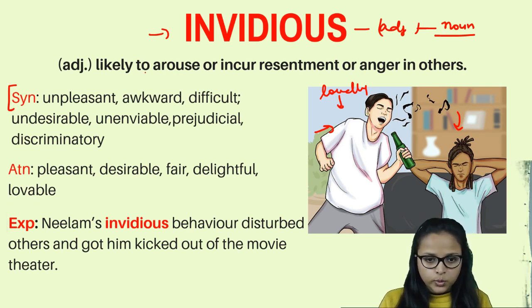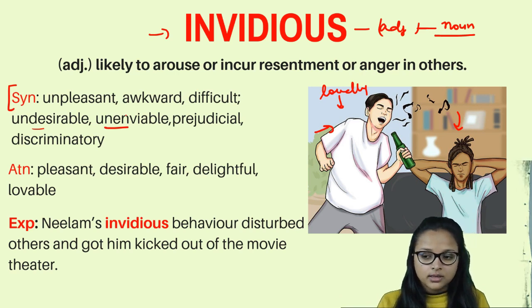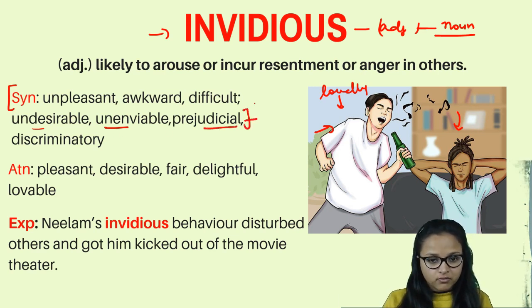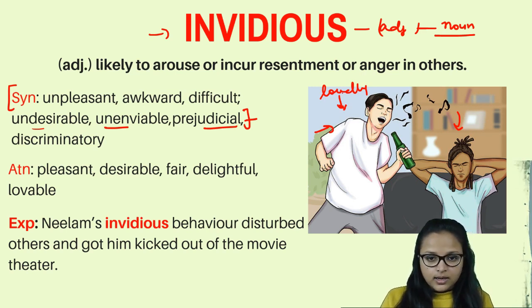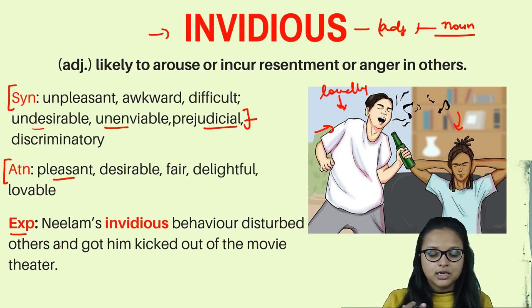Synonyms of invidious are: unpleasant, awkward, difficult, undesirable, unenviable, and discriminatory — because when we don't like someone we are being prejudiced or biased. Antonyms are: pleasant, desirable, fair, delightful, and lovable. Example: Neelam's invidious behavior disturbed others and got him kicked out of the movie theater — meaning his behavior was not acceptable by other people.